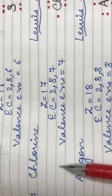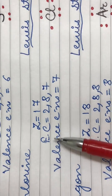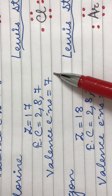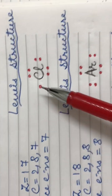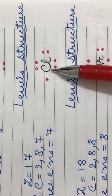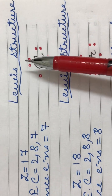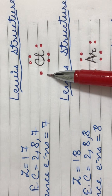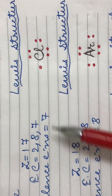Coming to the next element, chlorine. It has an atomic number of seventeen. Its electronic configuration is 2,8,7 and it has seven valence electrons. Therefore, the Lewis structure for chlorine is its symbol Cl with seven dots placed around it in pairs, representing all seven valence electrons.